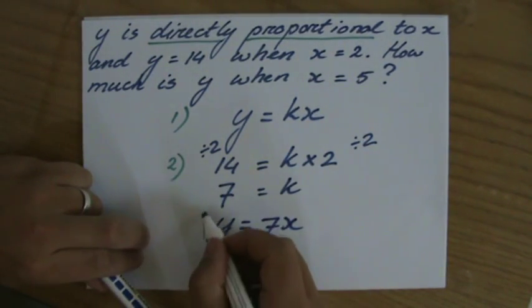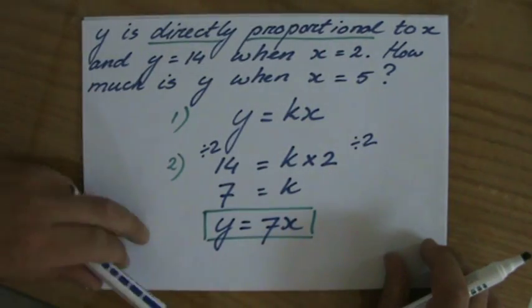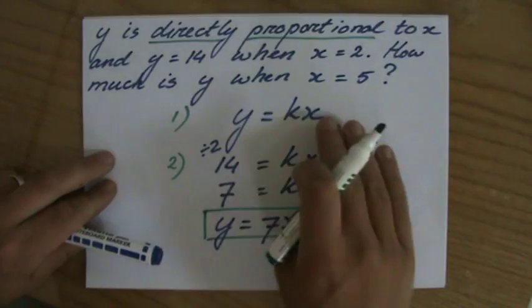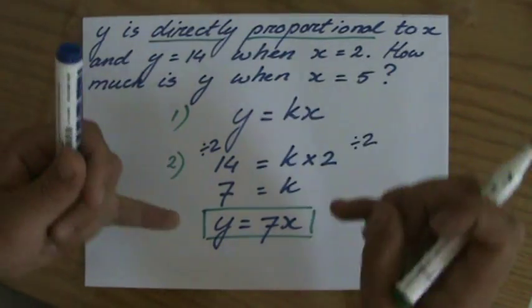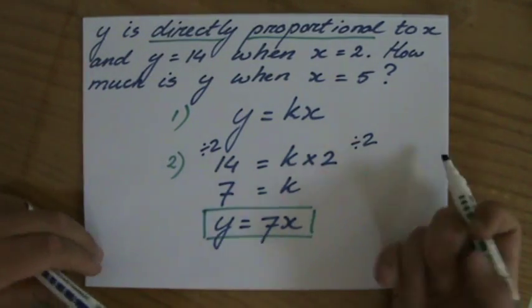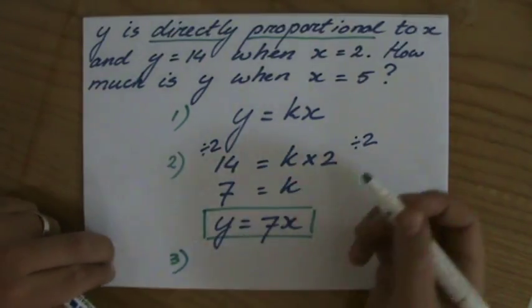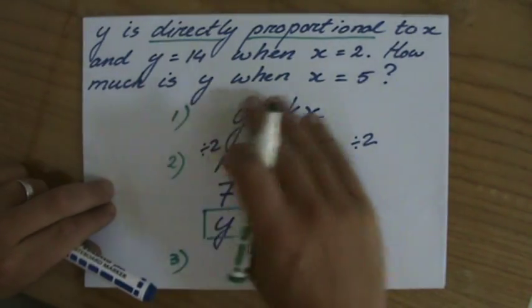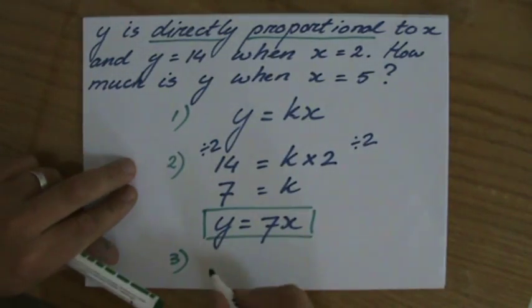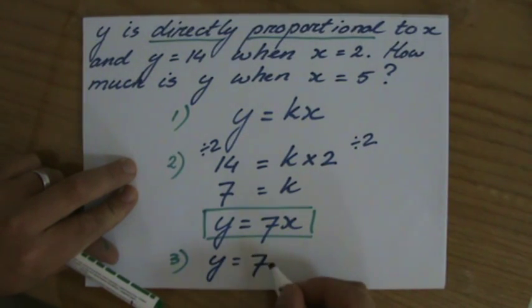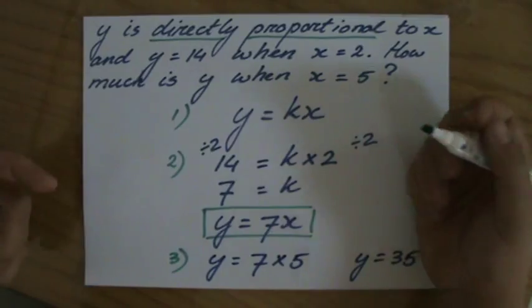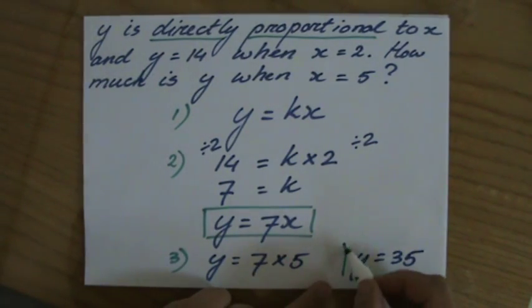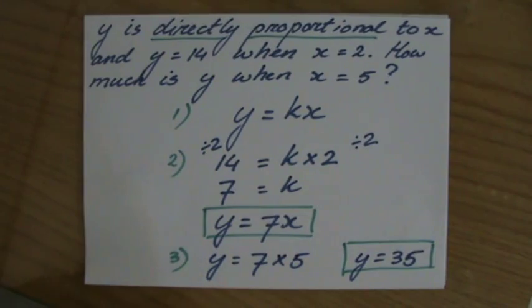You always have to find the equation belonging to the situation in your question. They give you a value for y and x, then you find the equation y equals 7x. Your third step is: how much is y when x is 5? That is substitution. So y equals 7 times 5, which is 35.